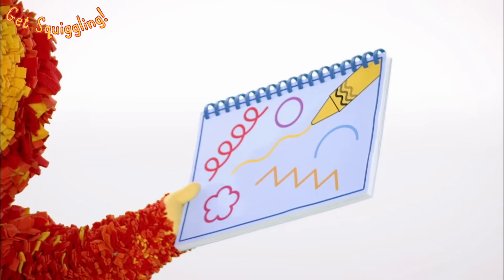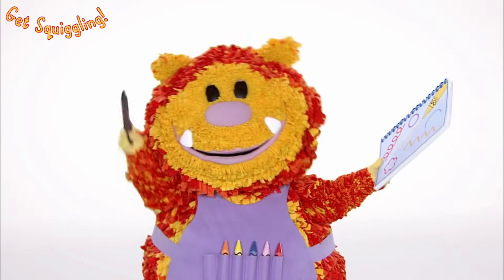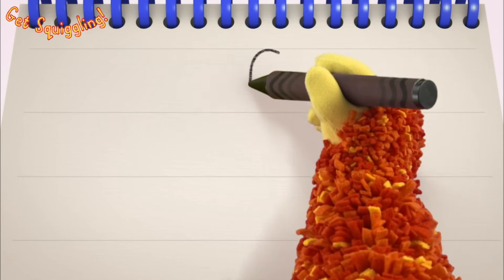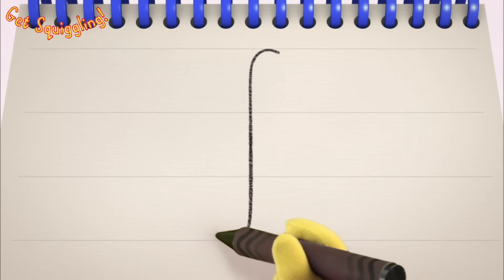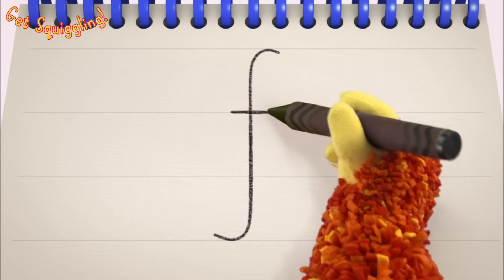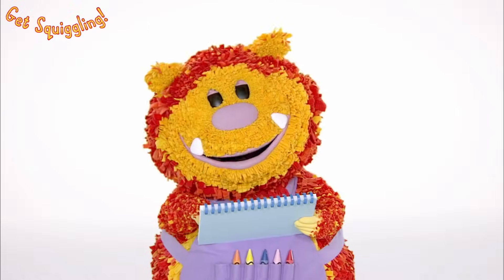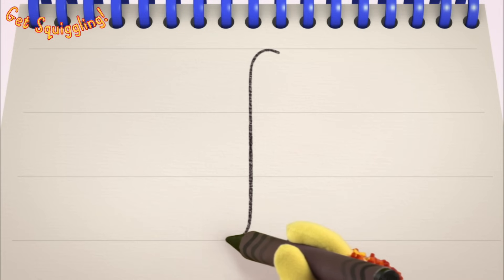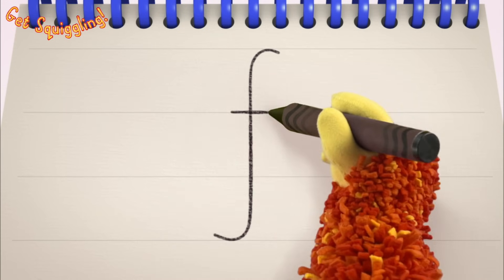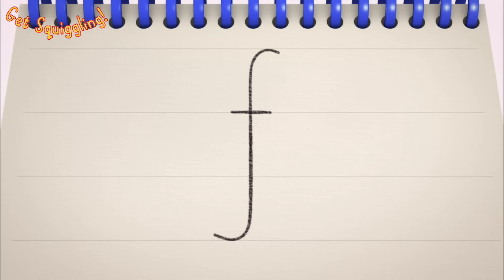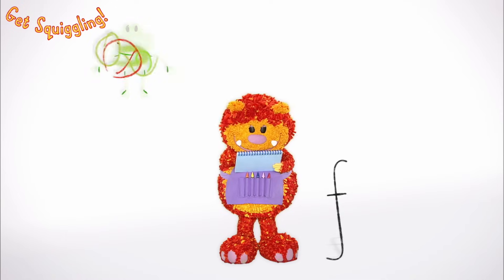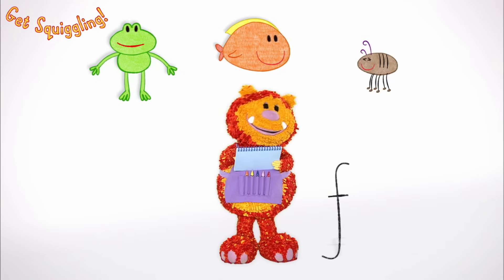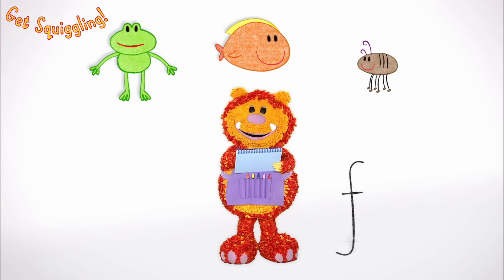Have you got your squiggle pads and squiggle sticks ready? Let's get squiggling! Holding your squiggle stick like this, go round, down, round and across — the letter F! Let's squiggle it again: go round, down, round and across — the letter F! Shall we squiggle some things that start with the letter F? A frog, a fish and a flea — they all begin with the letter F!